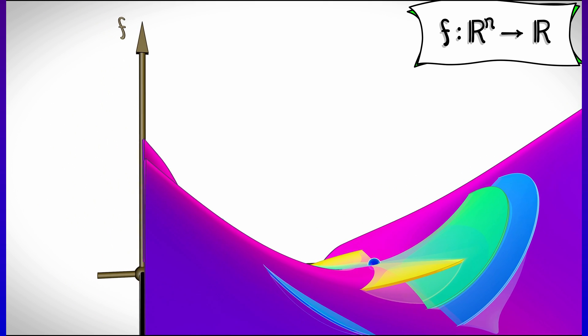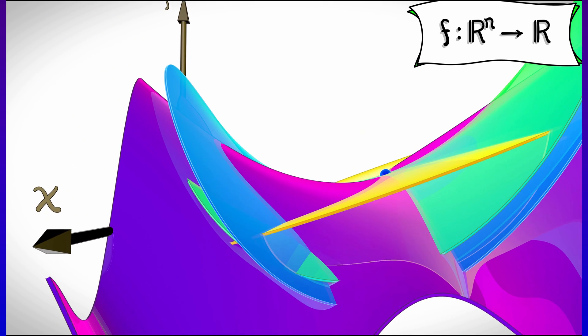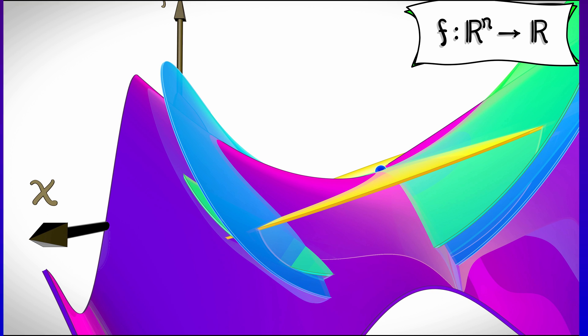That's what the multivariable Taylor expansion of a function really looks like. Okay, so what's the formula? Well,